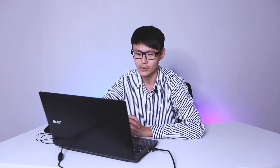First, there are three main programs we have to know in MODX 3D. One is called the license monitor — we can use it to monitor the state of the license server. And another one is called license agent — we can use it to check in and check out the license. Both of these will be installed with the MODX 3D main program.